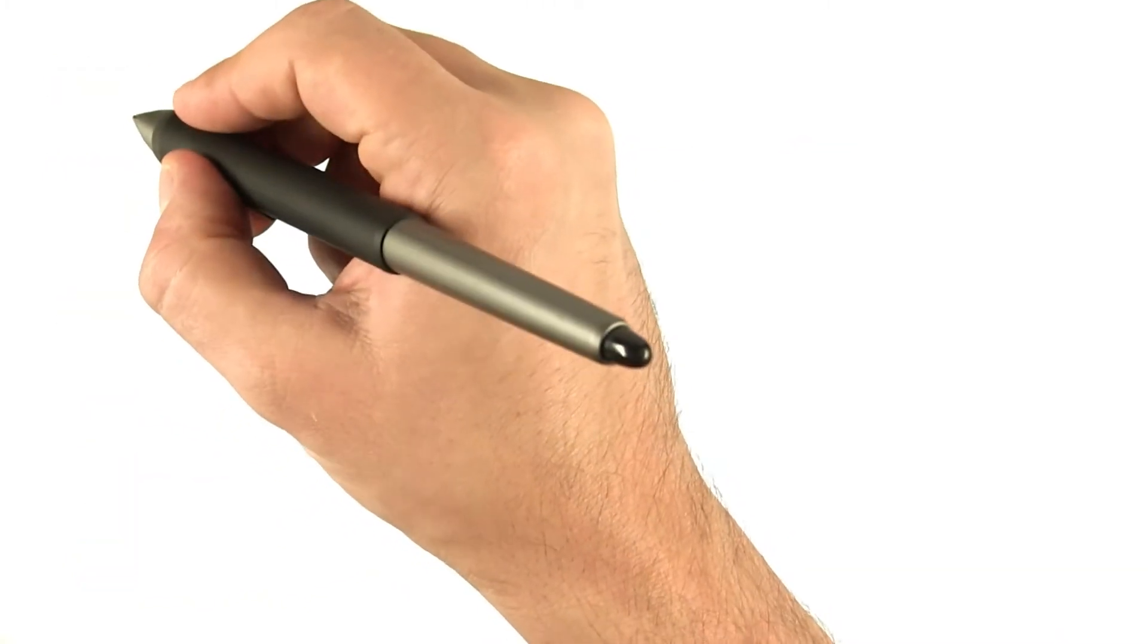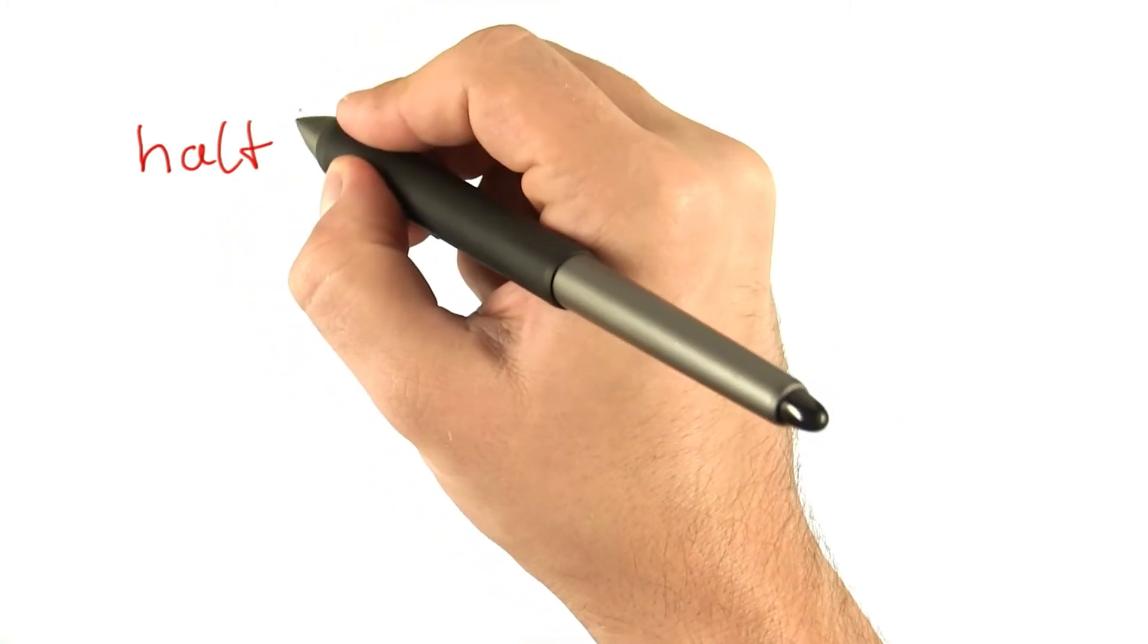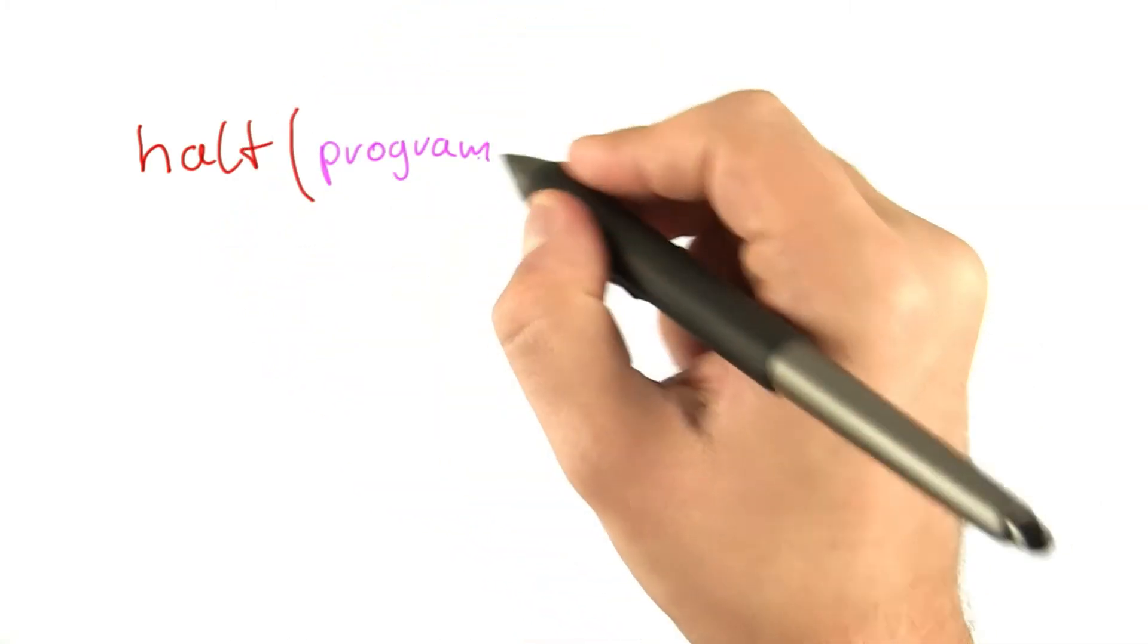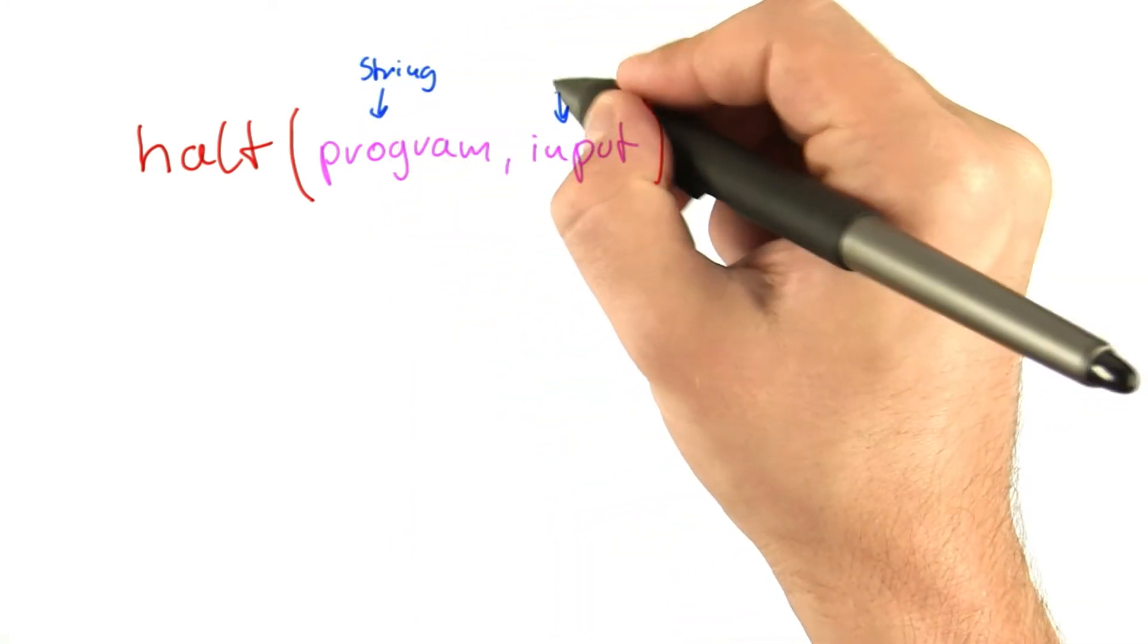So let's assume we had such an algorithm. We have an algorithm or function called halt. Halt is called with two arguments: one is a program, the other is the input. And of course, these are both strings.